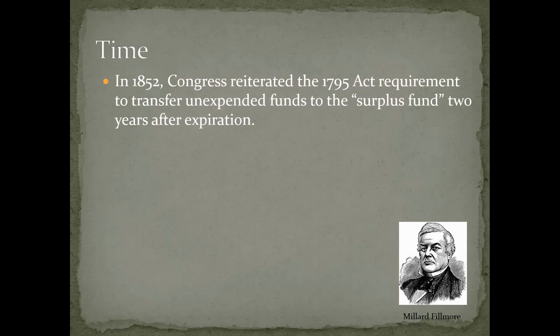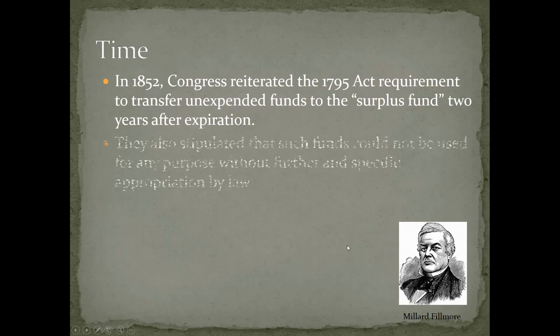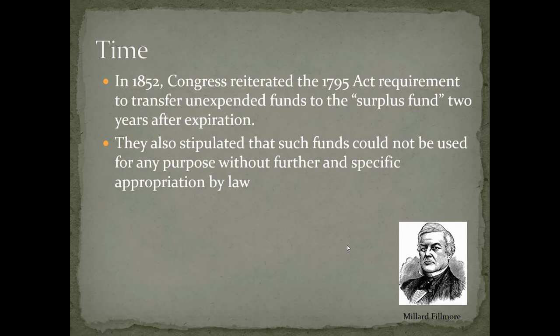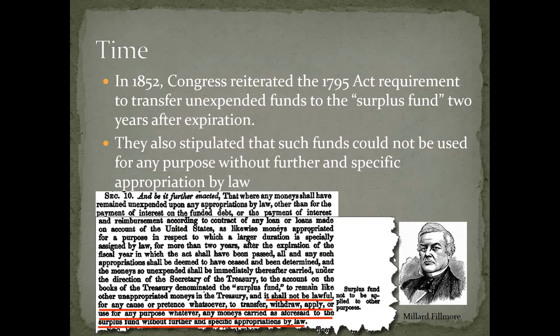In 1852, Congress felt they needed to reiterate the 1795 act requirement to transfer unexpended balances to the surplus fund two years after expiration. At that time they also stipulated that such funds could not be used for any purpose without further and specific appropriation by law, during the term of Millard Fillmore. The language stated: 'It shall not be lawful for any cause or pretense whatsoever to transfer, withdraw, apply or use for any purpose whatever any monies carried to the surplus fund without further and specific appropriations by law.'